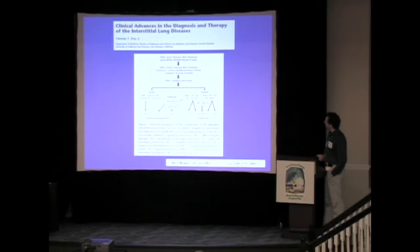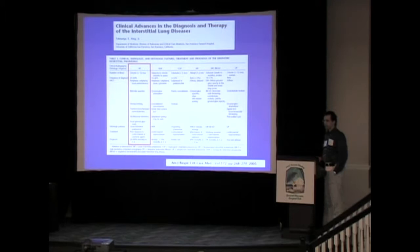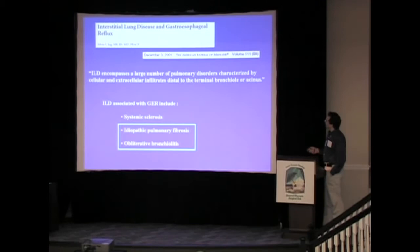Focusing on the idiopathic interstitial pneumonias, this is a little bit of a historical progression of the classification, which brings us to the current one, which includes IPF, UIP (usual interstitial pneumonia), NSIP, COP, AIP, DIP, and LIP. So there are quite a few subclassifications within the idiopathic interstitial pneumonias.